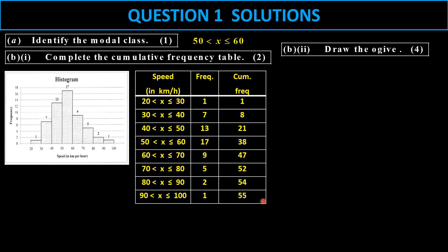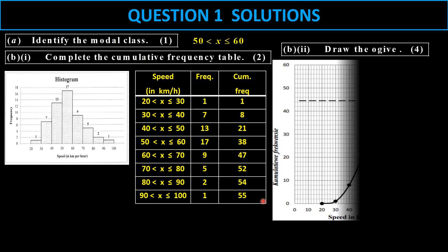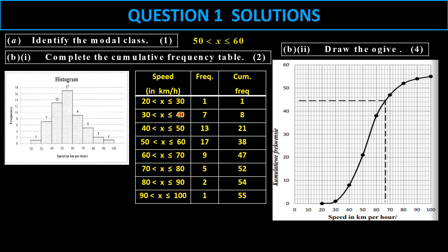To draw the ogive, we need to plot the upper limits with the cumulative frequency. You can see 30 with 1. So there's 30 with 1 and 40 with 8. And there is a very nice frequency curve.